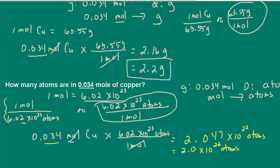Anytime you're asked how many atoms, how many particles, how many ions, how many molecules — that's when you need to come up with a relationship between moles and particles. And of course, that's using Avogadro's number.